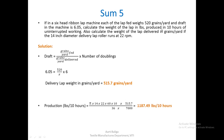Since production is required for 10 hours, we adjust accordingly: π × d × n gives inches per minute; multiplying by 60 gives inches per hour; multiplying by 10 gives inches per 10 hours; dividing by 36 gives yards per 10 hours. Multiplying by 515.7 grains per yard gives grains per 10 hours, and dividing by 7000 converts to pounds per 10 hours, giving 1187.49 pounds delivered in 10 hours.